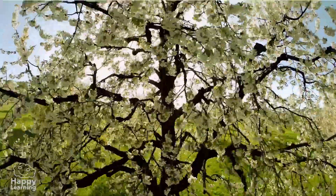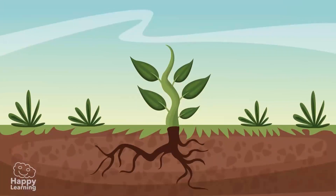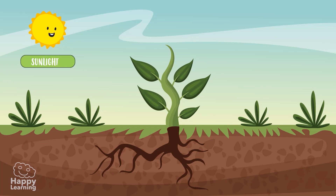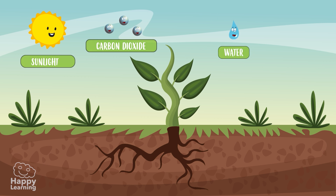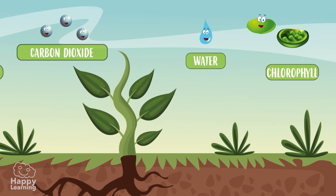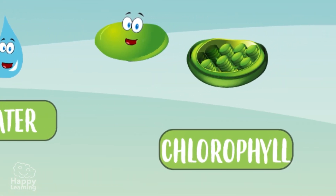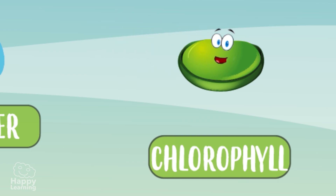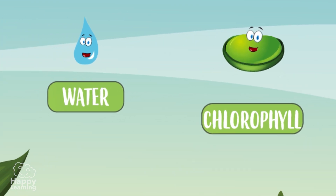In order to perform photosynthesis, they need various elements: sunlight, carbon dioxide obtained from air and water, and chlorophyll, which is a green substance that all plants have and is fundamental for performing photosynthesis, since it could not happen without it.